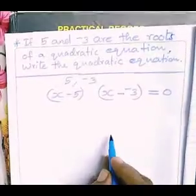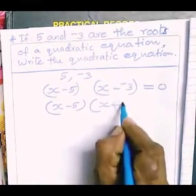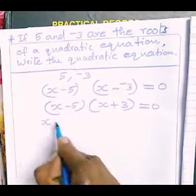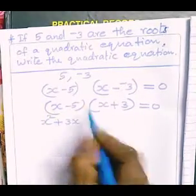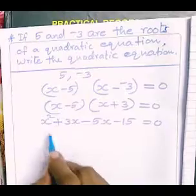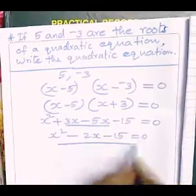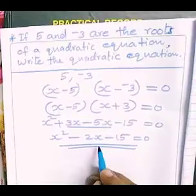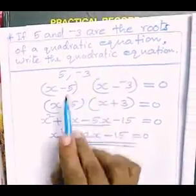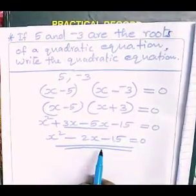So (x - 5)(x + 3) = 0. Expanding: x·x = x², x·3 = 3x, -5·x = -5x, -5·3 = -15. That gives x² + 3x - 5x - 15 = 0. Therefore, the required quadratic equation is x² - 2x - 15 = 0. So if the roots or solutions are given, we select the factors and find their product equal to zero to get the quadratic equation.